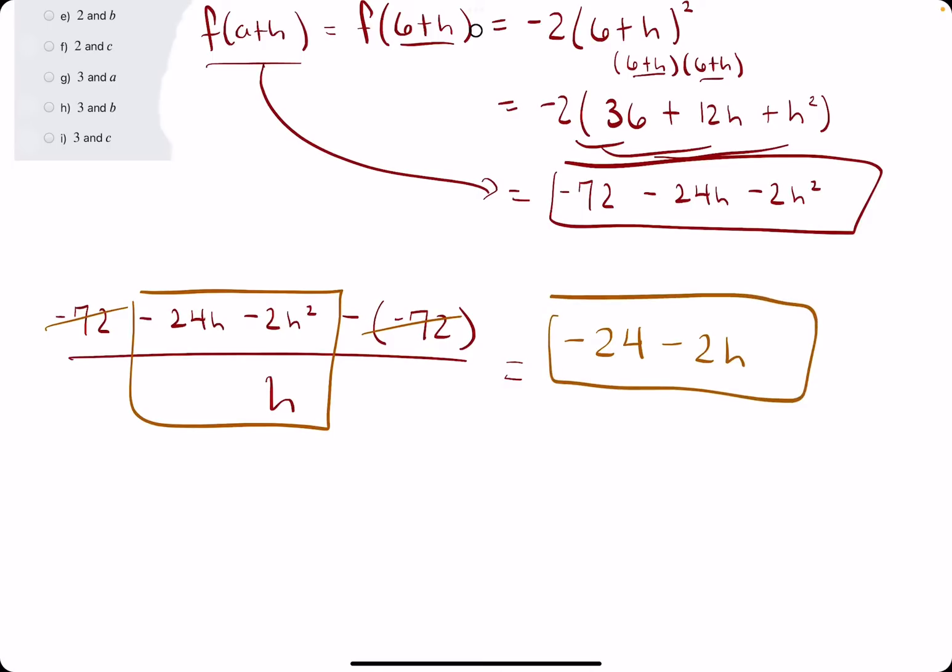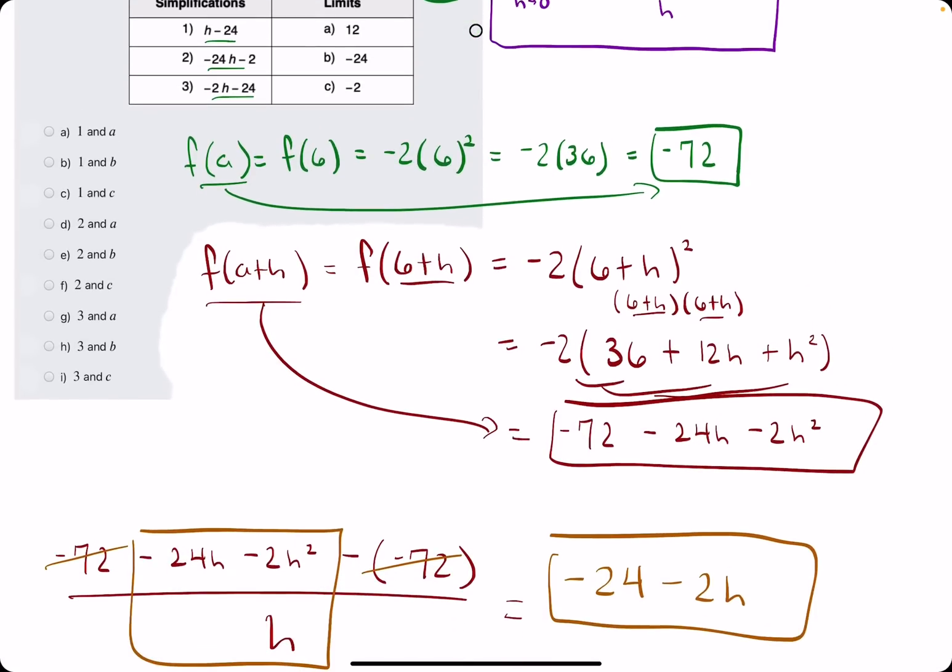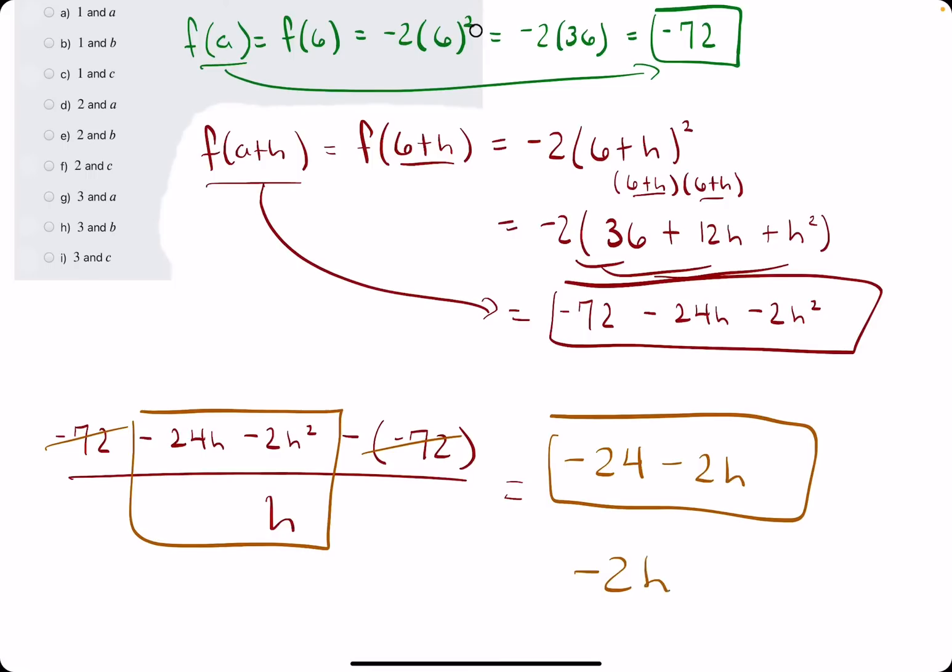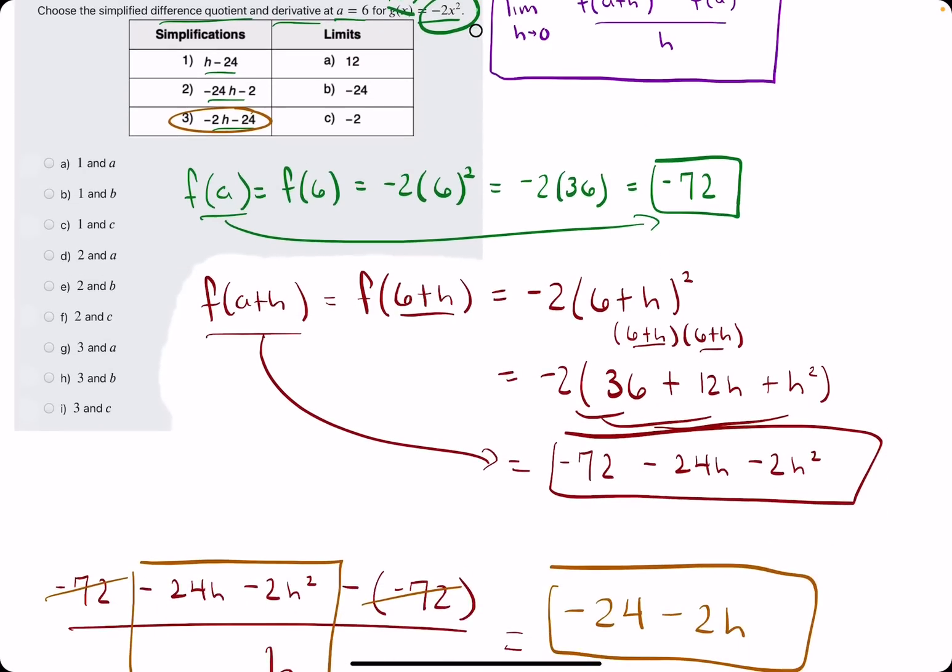So this should be the answer in that first column. It should be our simplified difference quotient. So negative 24 minus 2h, they've just flip-flopped it and called it negative 2h minus 24. So it looks like 3 is our simplification.